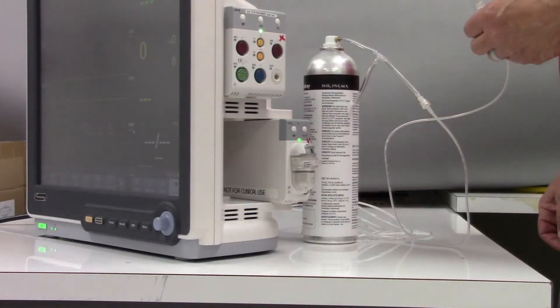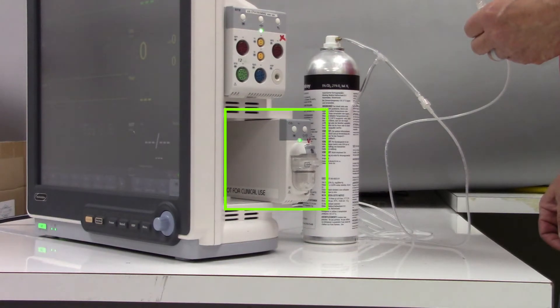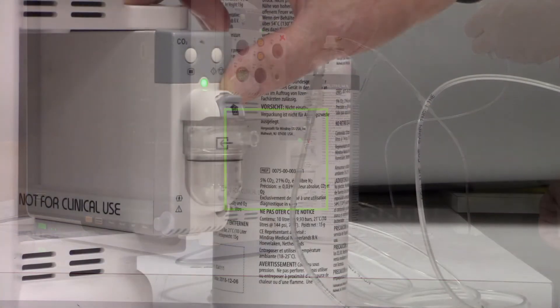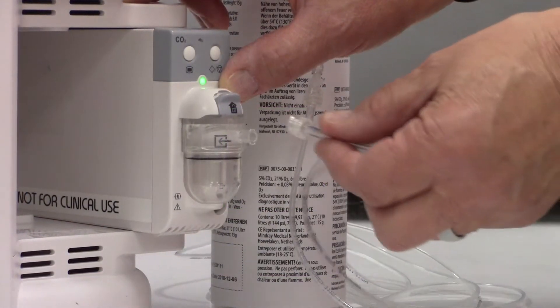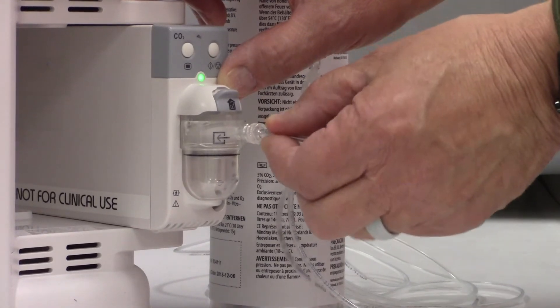Ensure your CO2 module has been installed and running in the monitor for at least 15 minutes before attempting calibration. When you are ready to begin calibration, attach the sample line to the water trap.